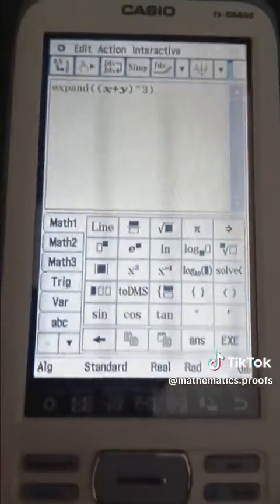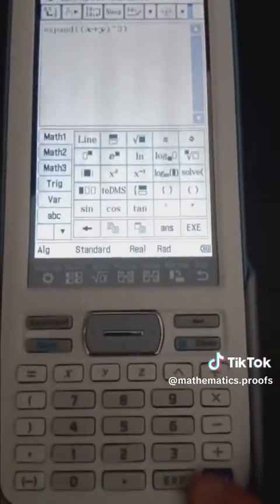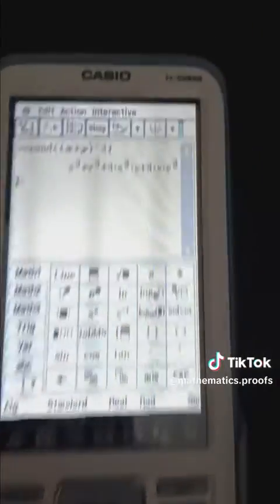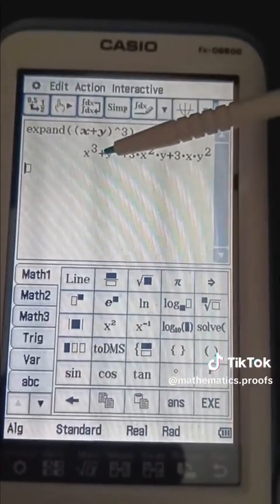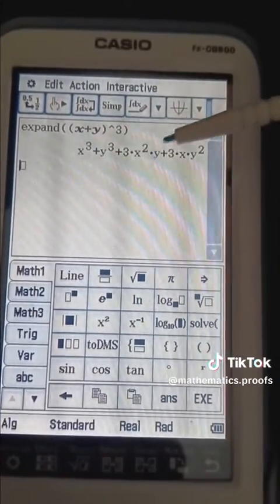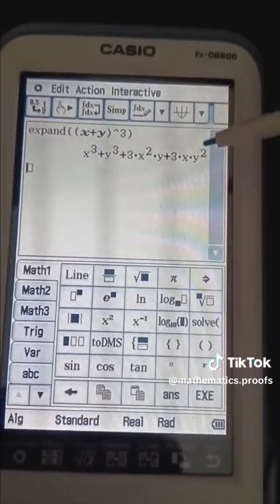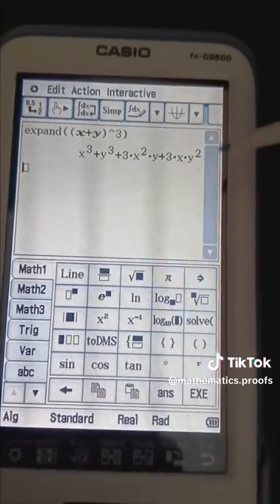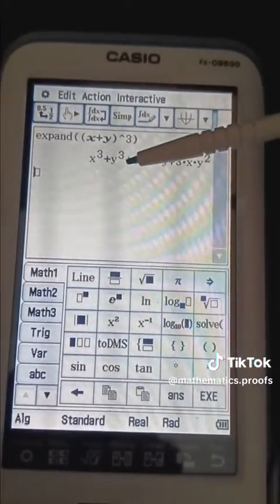Close the brackets and then I hit execute over here. As you can see that gives us x cubed plus 3x squared times y plus 3x times y squared plus y cubed.